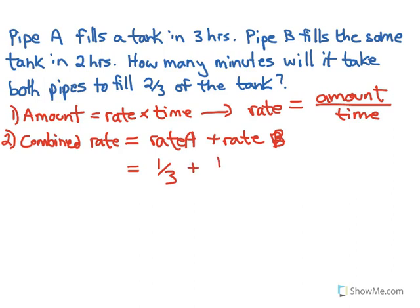Plus rate B, again one tank, but in two hours. Add these two together, a quick common denominator gives us two-sixths plus three-sixths, which equals five-sixths. In other words, turning them both on together fills five-sixths of the tank per hour.